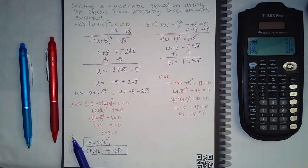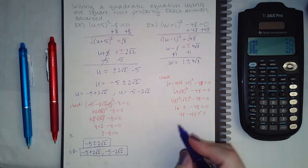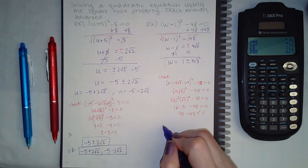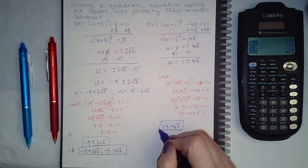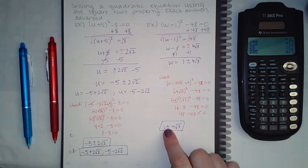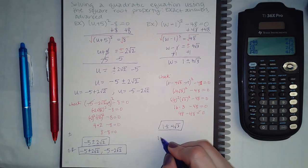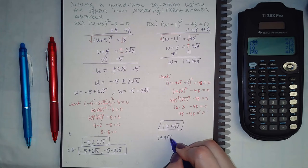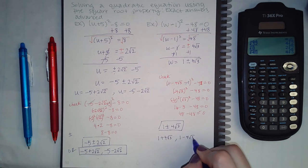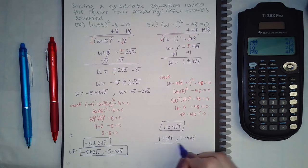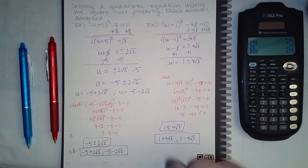So the negative version checks out as well. Remember: depending on whether Alex has the plus or minus button available in the text solution, you can type 1 ± 4√3 as your answer. But if that button is not available, you have to type each answer individually with a comma in between.